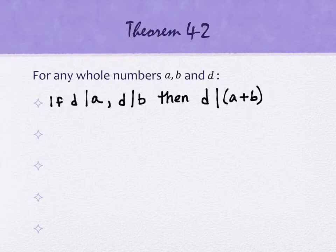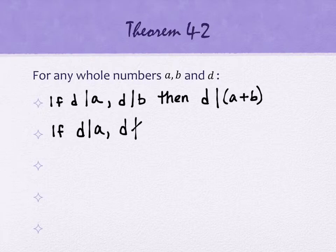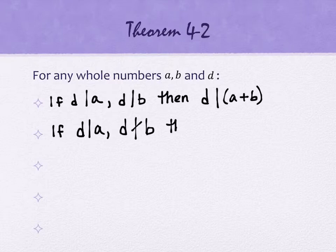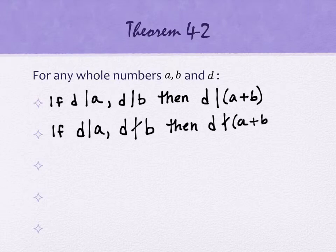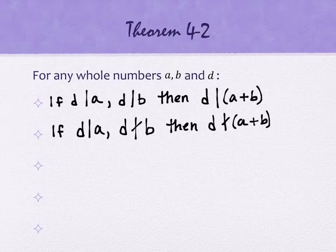Property two: if D divides A but D does not divide B — noted with a slash through the divisibility symbol — then D does not divide A plus B. Using our example: three divides six, and three does not divide four. Six plus four is ten, and three does not divide ten. That property always holds.